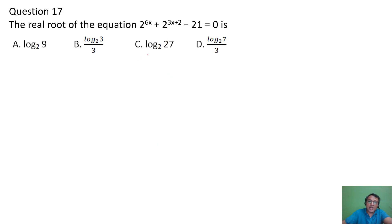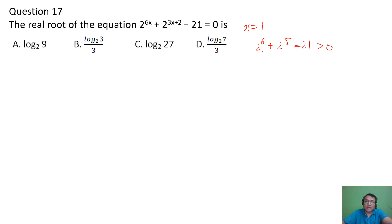For the next problem, I can see that the answer cannot be more than 1 because if x=1, you get 2⁶+2⁵ which is definitely more than 0. So x must be less than 1. But log₂(9) is more than 1 — not possible. Log₂(27) is more than 1 — not possible. So I'm left with options B and D for sure.